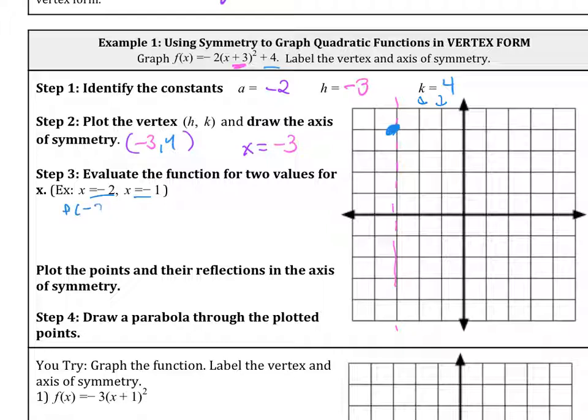Let's go ahead and do f of negative 2. We take that x value and plug it into the original and solve. This is negative 2 times negative 2 plus 3 squared plus 4. You get negative 2 times 1 squared plus 4. Remember the order of operations, you have to do the exponent first. This becomes negative 2 times a positive 1 plus 4. Negative 2 plus 4 is a positive 2.